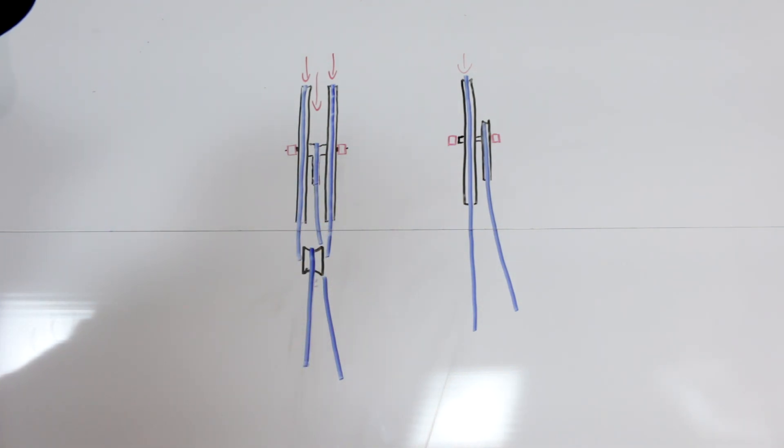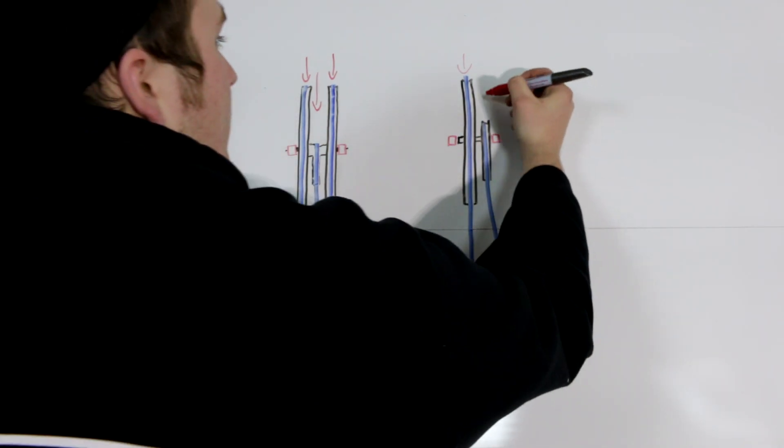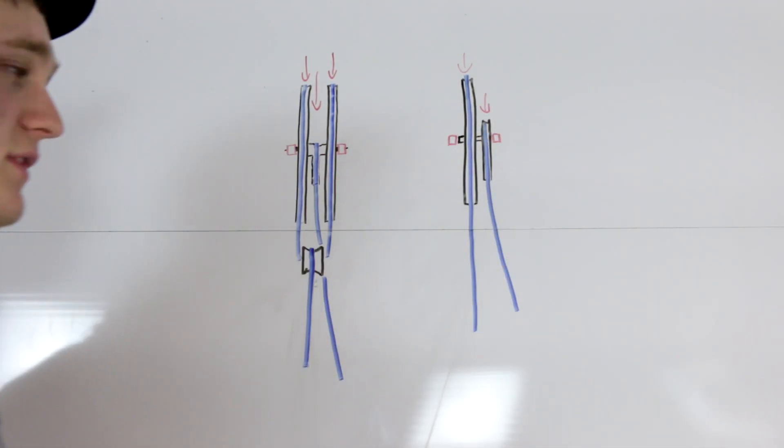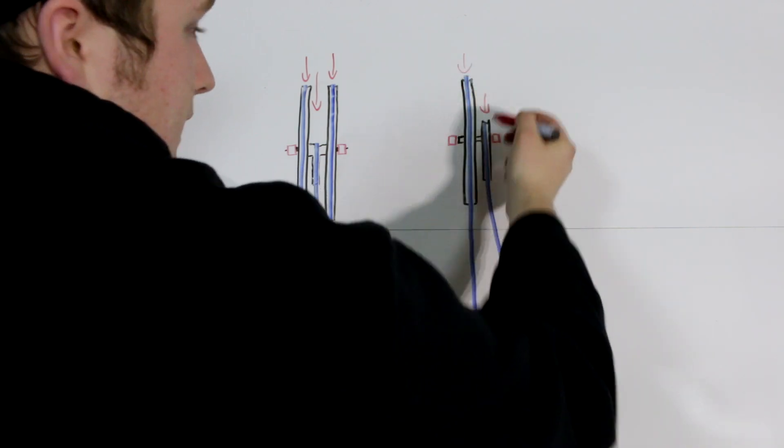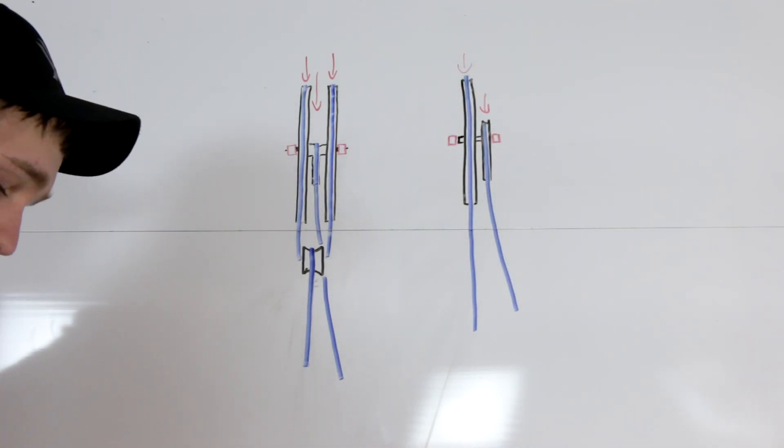Whereas with your traditional binary cam system, particularly with this two track, same applies for three track, as you get to full draw, that weight transfers to your cable and pulls over here. Now all of a sudden you'll notice that weight is being pulled off to the side of this limb. Therefore you're going to end up with cam lean most commonly.